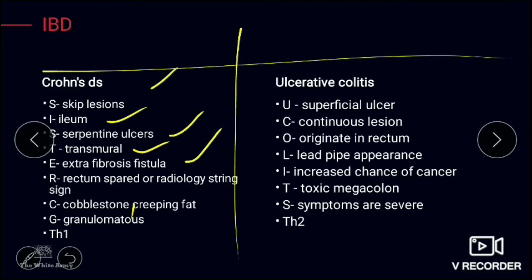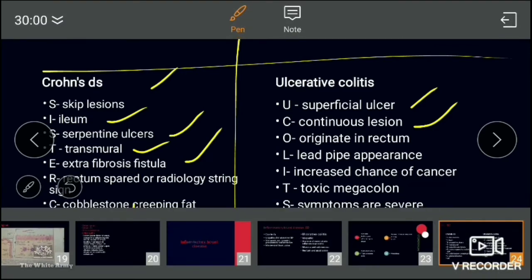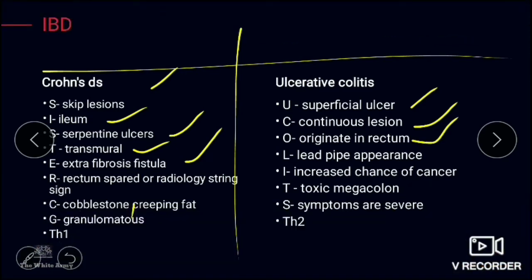For ulcerative colitis, the mnemonic is 'EUCOLITIS TH2': Ulcers are superficial, involving only mucosa and submucosa. It is a continuous type of lesion (not skip), originating in the rectum. On barium swallow, a lead pipe appearance is seen. There is an increased chance of cancer compared to Crohn's disease. Toxic megacolon may form as a complication, symptoms are more severe, and TH2 cells are responsible.